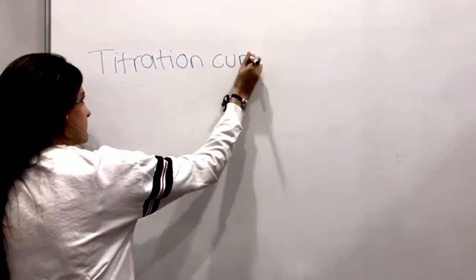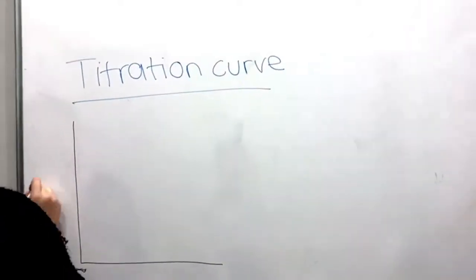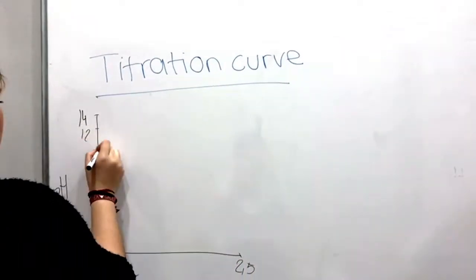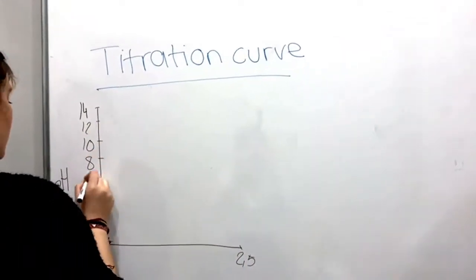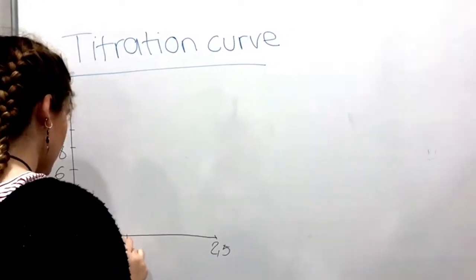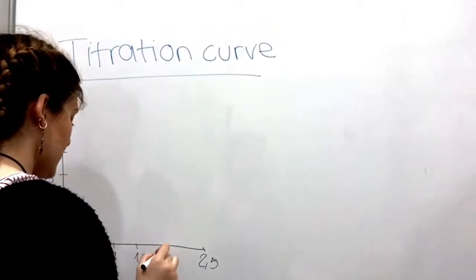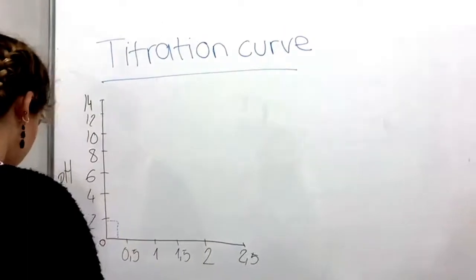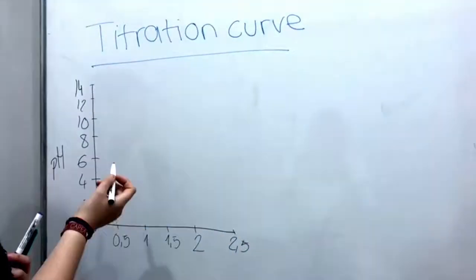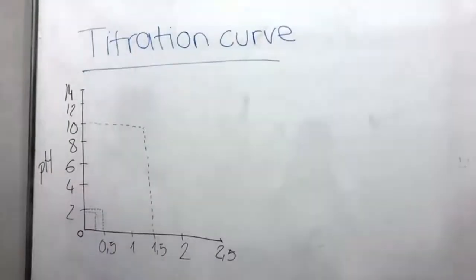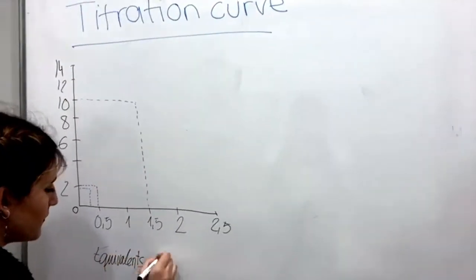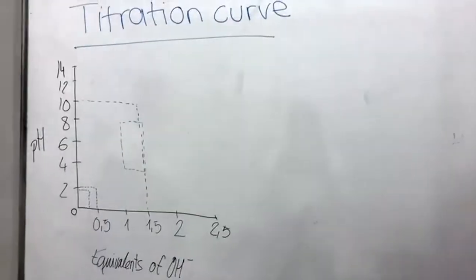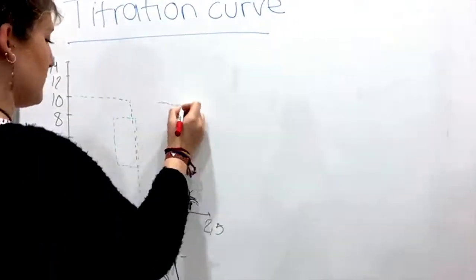Titration curve. Before we start discussing this titration curve, we should know that the pKa affects an amino acid's structure. Here, there is an example of alanine. In this graph, the y-axis represents the pH and the x-axis represents the equivalents of OH. At the beginning, the pKa is 2.34.